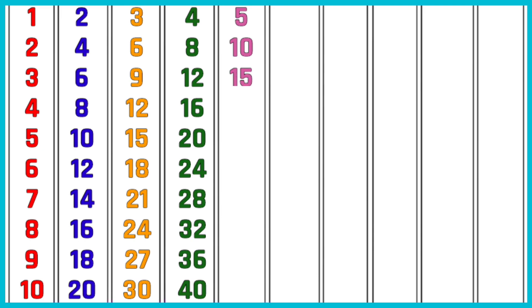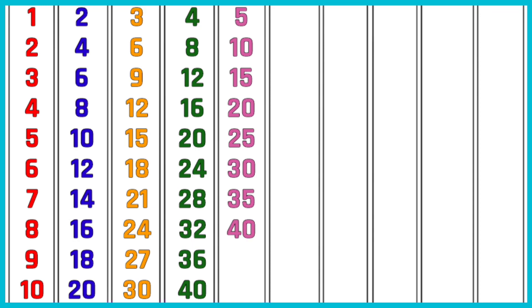5 threes are 15. 5 fours are 20. 5 fives are 25. 5 sixes are 30. 5 sevens are 35. 5 eights are 40. 5 nines are 45. 5 tens are 50.